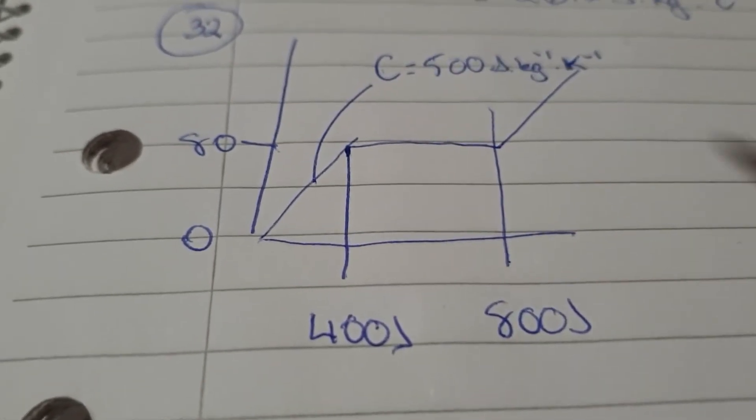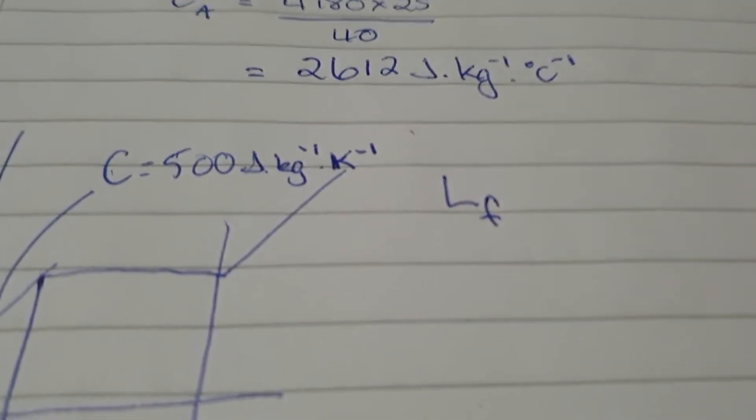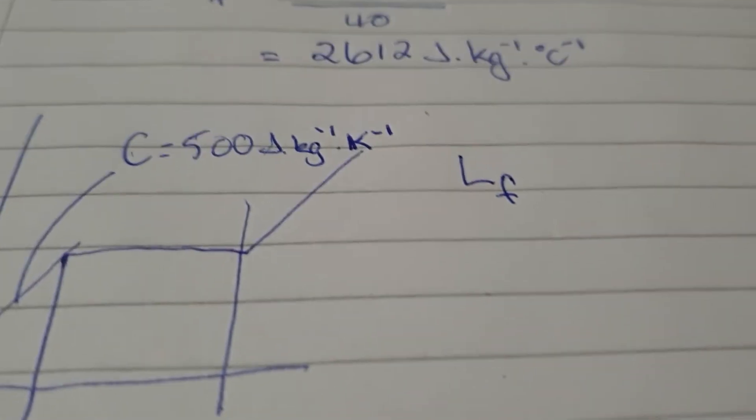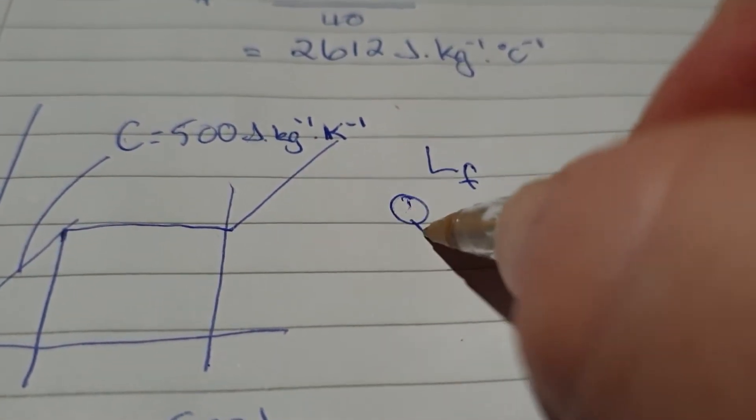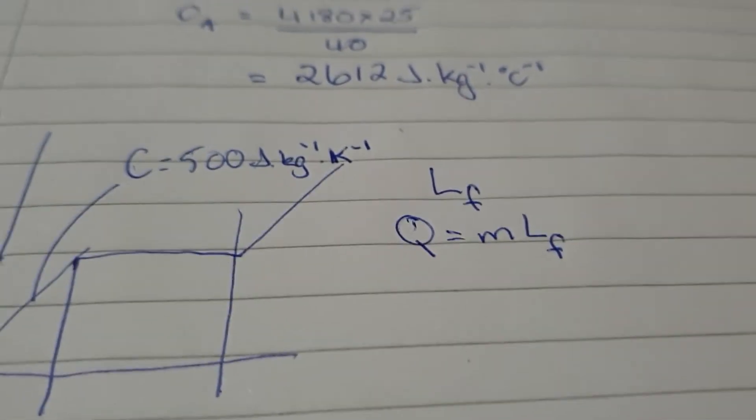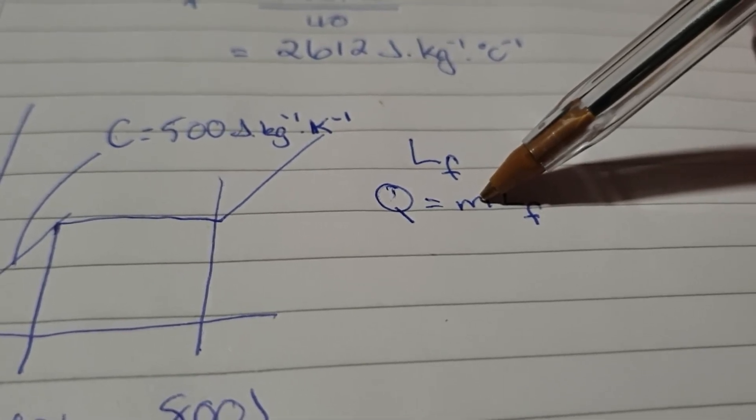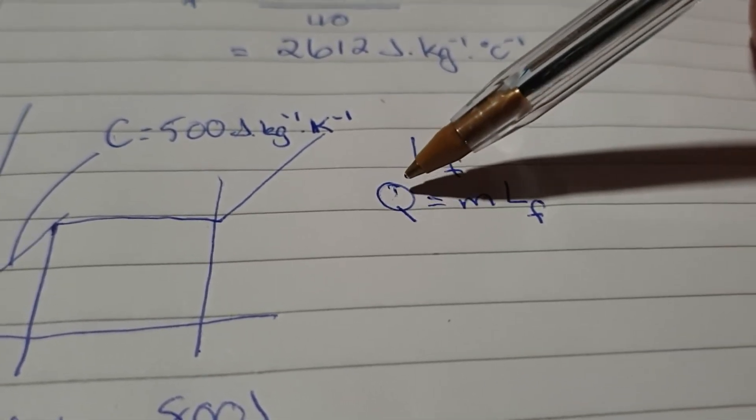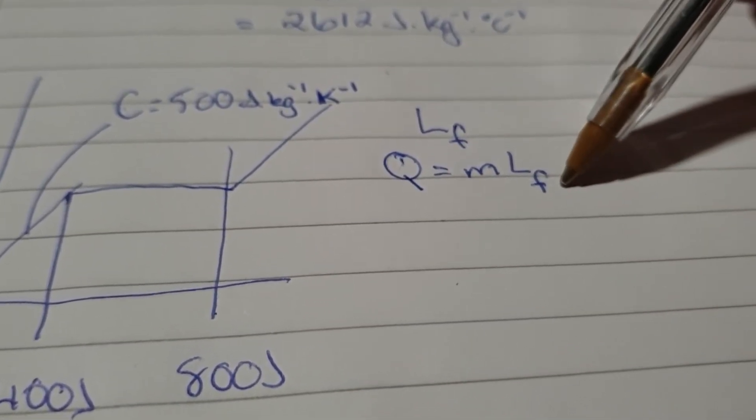So, it wants me to work out the latent heat of fusion. So, I'm after LF. So, if I don't know what to do, I go looking for a formula that has LF in it. There is only one. It's Q equals MLF. So, it would be nice if I had M. If I had M, I could work out LF.